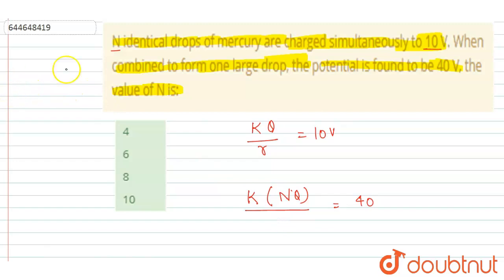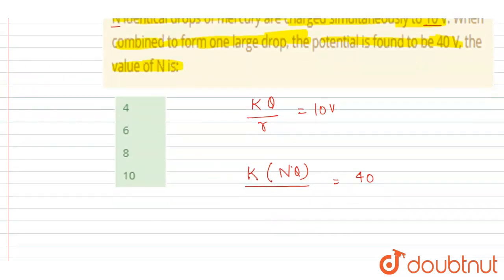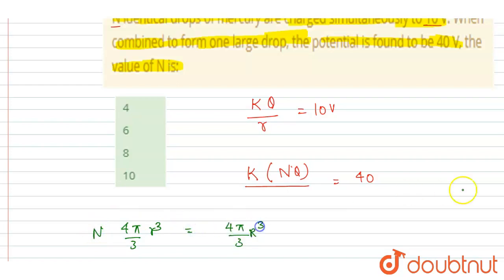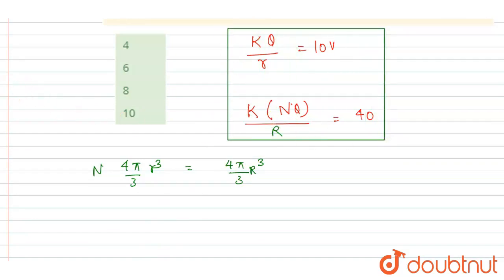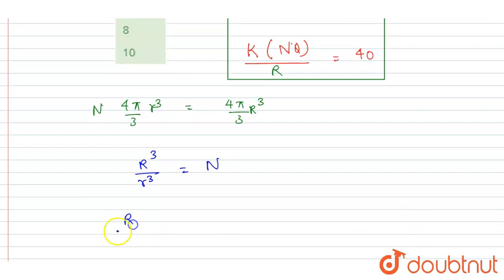Now you can get capital R, since the total mass will not change and total volume will also remain constant. Earlier there were n drops, so volume conservation gives us capital R cube by small r cube equals to n, so R by r equals to n to the power 1 by 3.